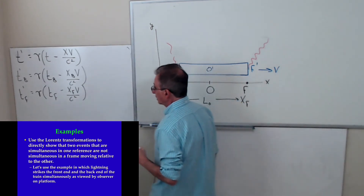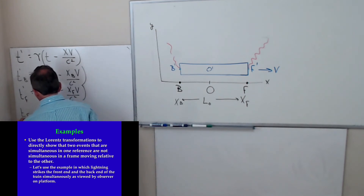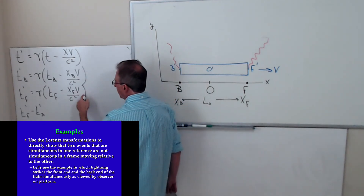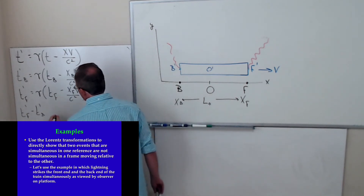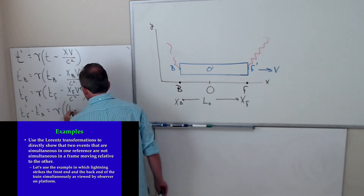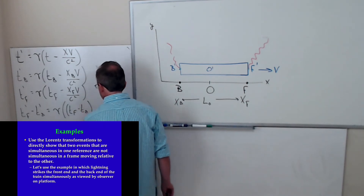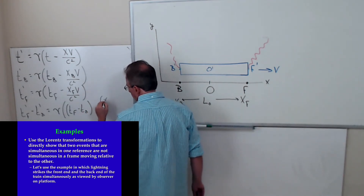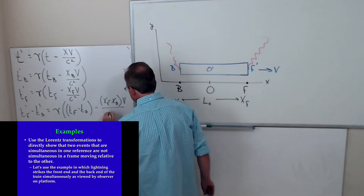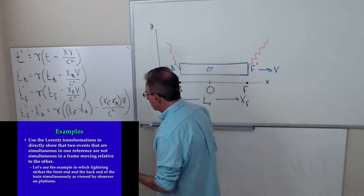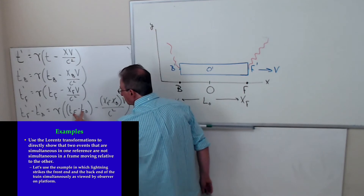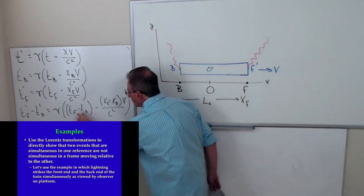I'm writing T sub F prime and T sub B prime in terms of the unprimed values. Then what I want to do is calculate the difference in those two times — T sub F prime minus T sub B prime. I'm going to take the bottom equation and subtract the top from it, giving me gamma times (T sub F minus T sub B) minus (X sub F minus X sub B) times V over C squared. Now in observer O's reference frame, these two events happen at the same time, so T front minus T back is zero.